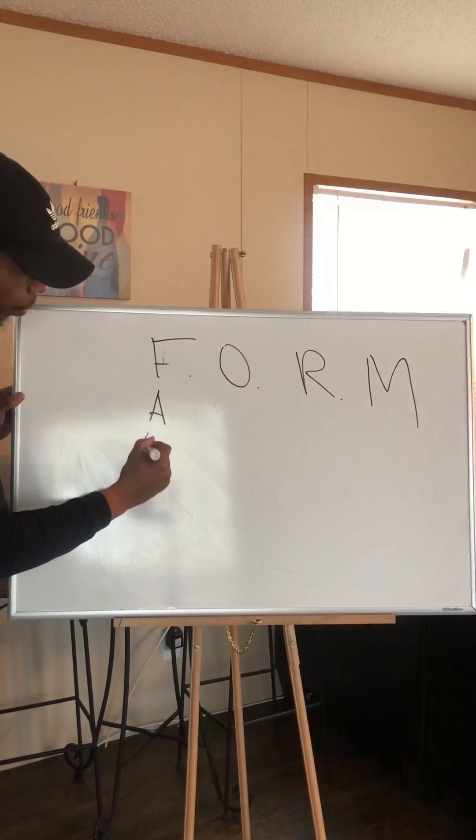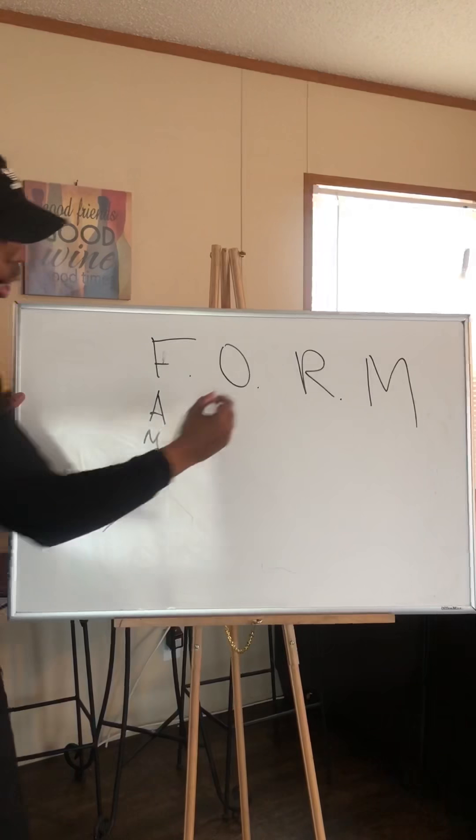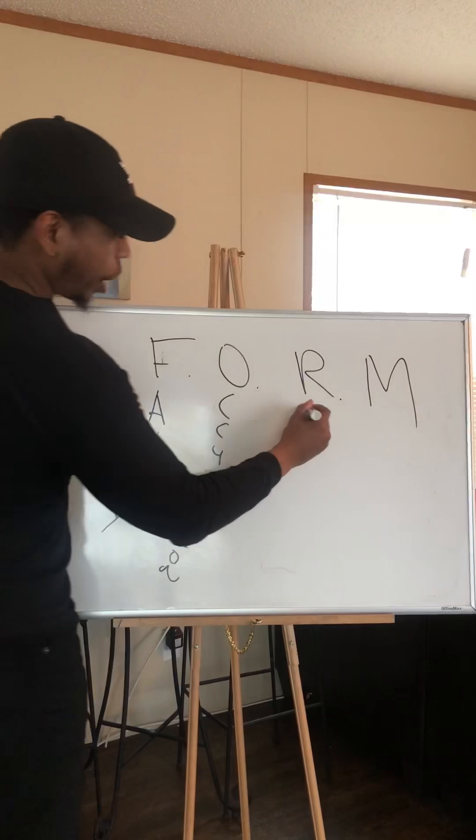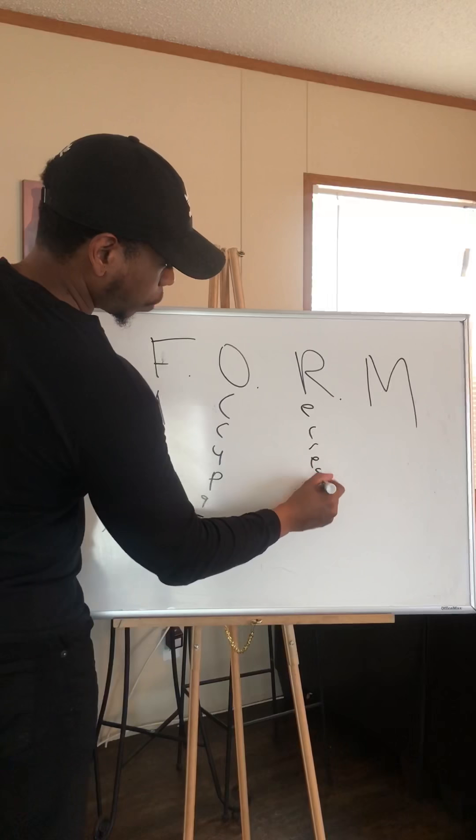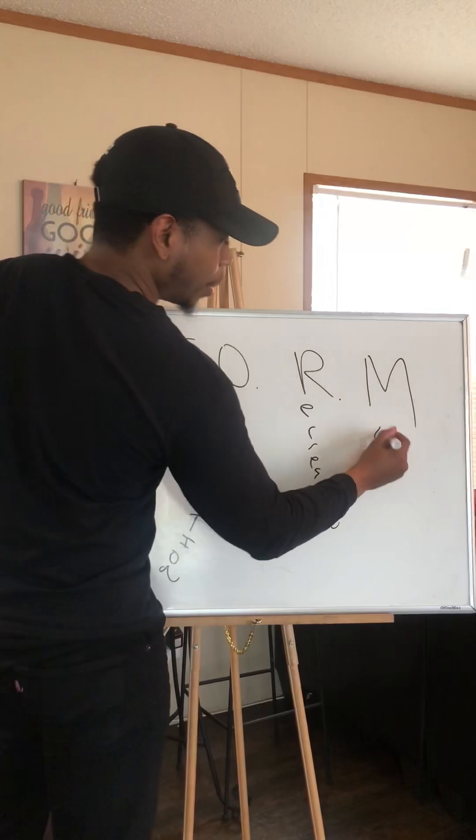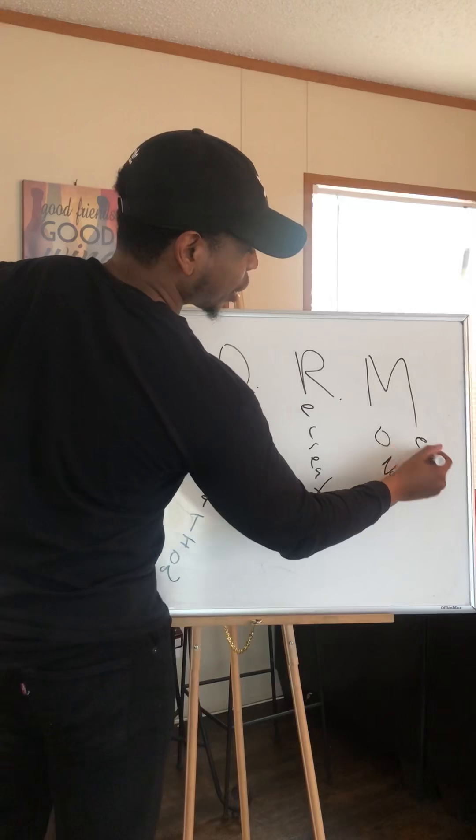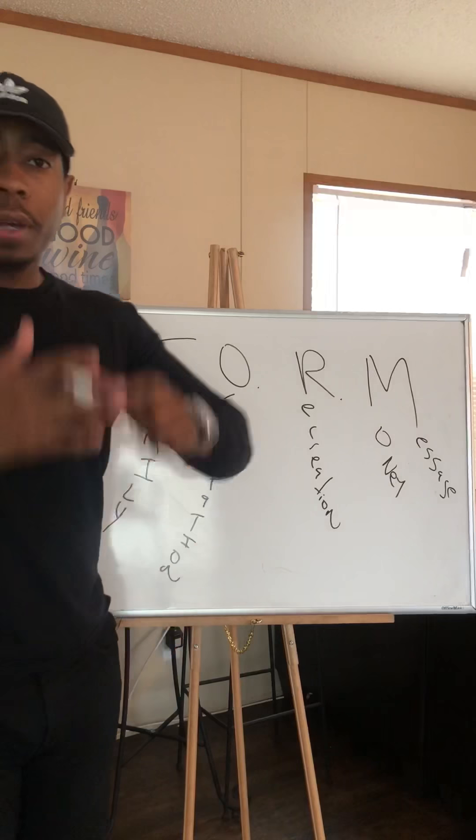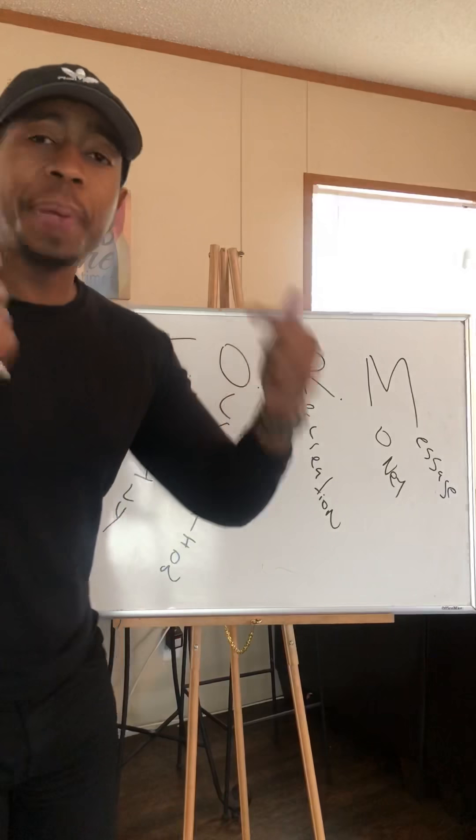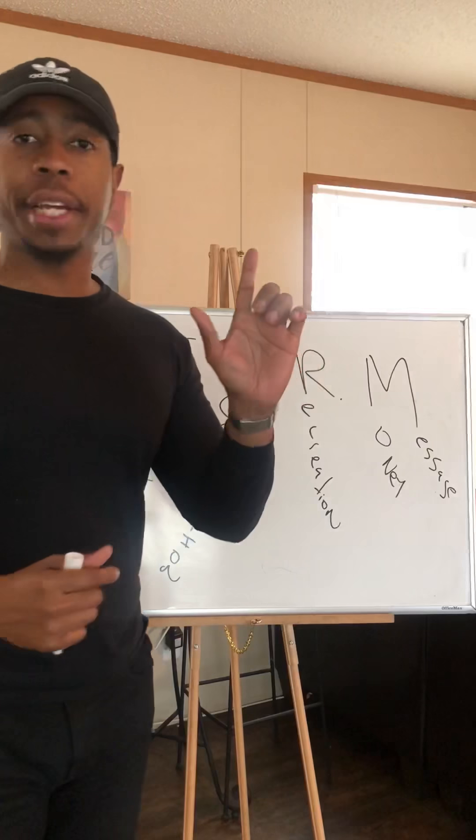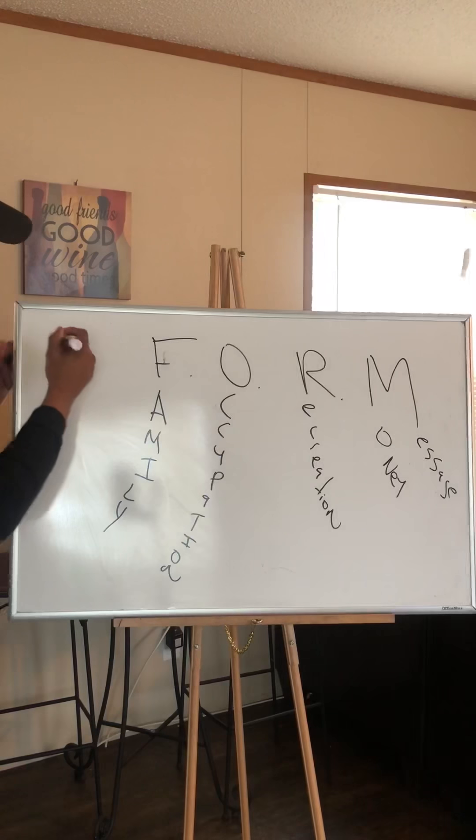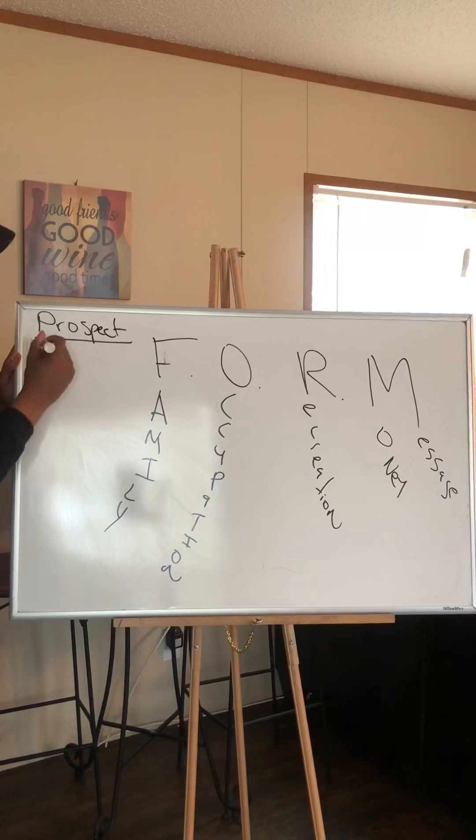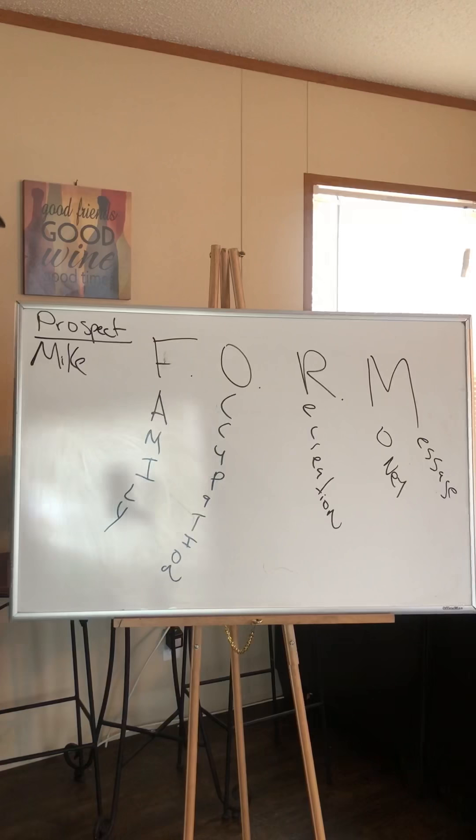The first thing you need to do when you're looking to pique somebody's interest, you have to use FORM. Form stands for Family, Occupation, Recreation, and then Money, or you can use Message. This is how FORM breaks down and this is the correct way to form people and pique their interest so that you can show the plan.